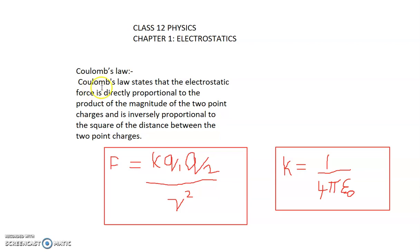Coulomb's law states that the electrostatic force is directly proportional to the product of the magnitude of the two point charges and is inversely proportional to the square of the distance between them. This law is called Coulomb's law.